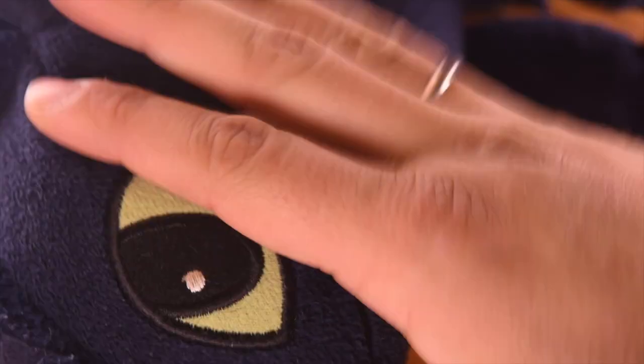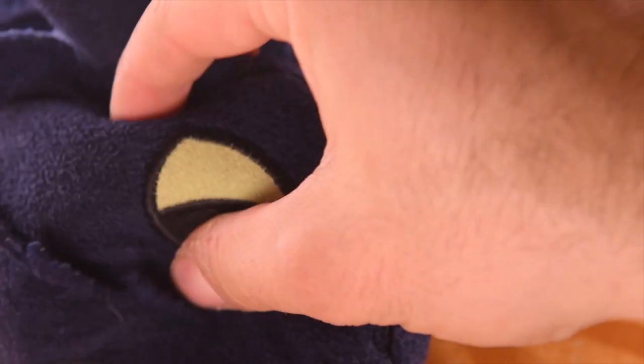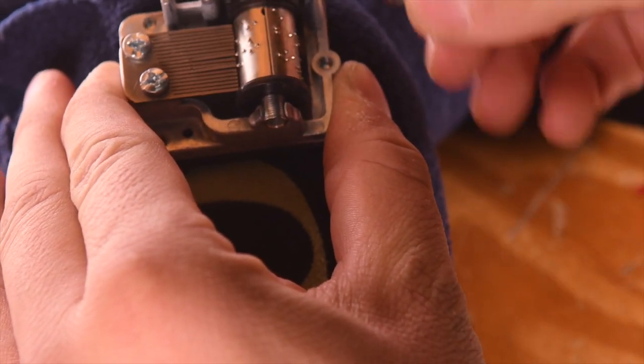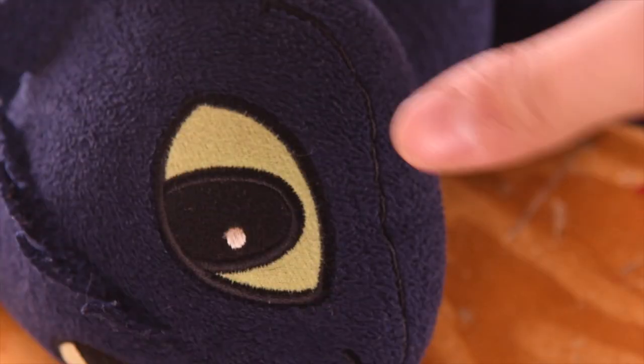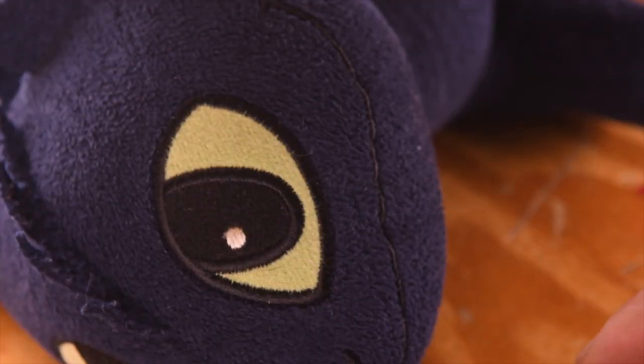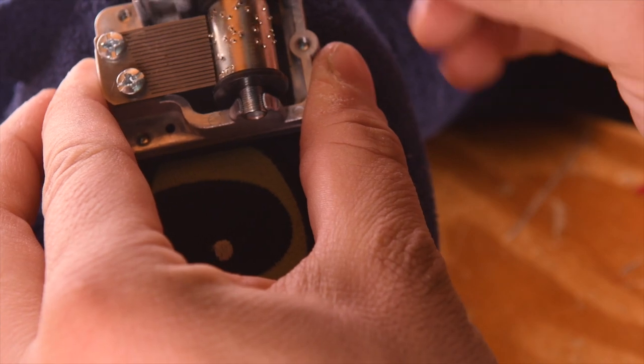Since this stuffed animal, Toothless from How to Train Your Dragon, is just so squishy, sound waves have a hard time going through it that well.